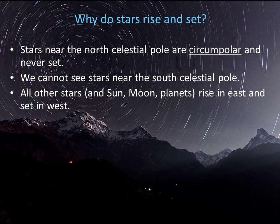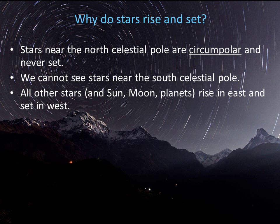Stars near the south celestial pole are not visible. All the other stars, and the sun, the moon, and planets, arise somewhere in the east and set somewhere in the west. The image in the back shows a photo where the camera shutter has been left open for a few minutes. The lines you see are star trails — all the stars appear to rotate around a single point, which is the north celestial pole.